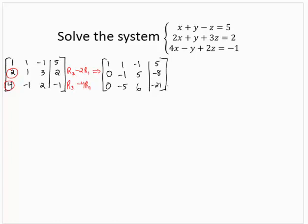So we have the first column as 1, 0, 0. Now we'll focus on the second element in the diagonal. We want to make that negative 1 a positive 1, so we'll multiply the entire row 2 by negative 1.